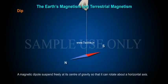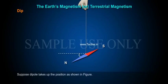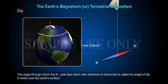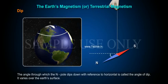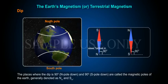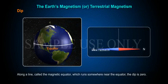Dip: a magnetic dipole suspended freely at its center of gravity so that it can rotate about a horizontal axis takes up a position as shown in the figure. The angle through which the end pole dips down with reference to the horizontal is called the angle of dip. It varies over the earth's surface. The places where the dip is 90° (north pole down) and 90° (south pole down) are called the magnetic poles of the earth, generally denoted as Nm and Sm. Along a line called the magnetic equator, which runs somewhere near the equator, the dip is zero.